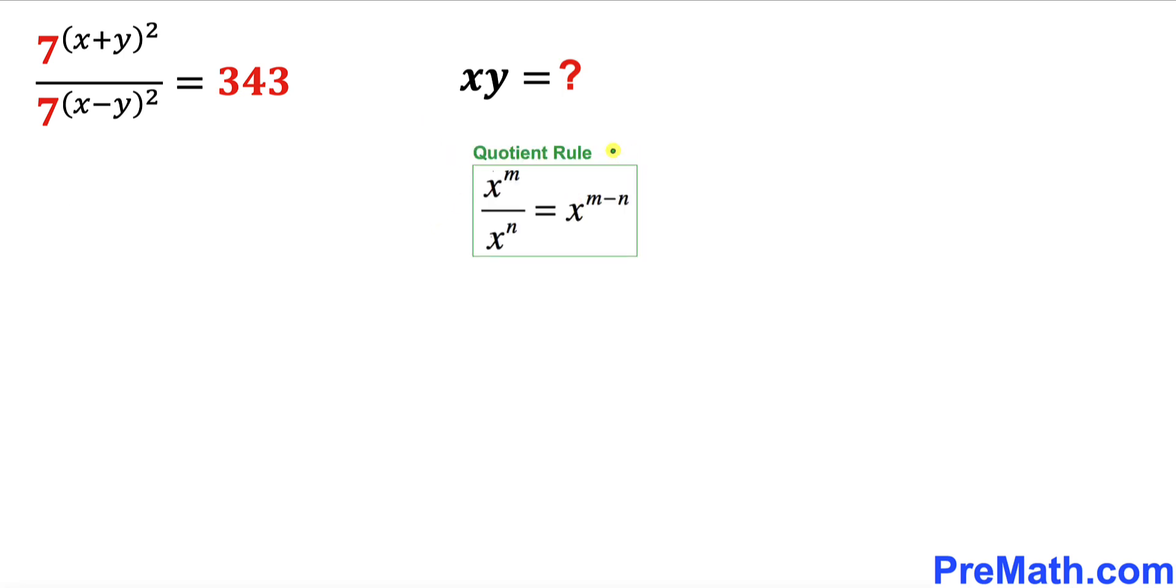Now let's recall the quotient rule of exponents. We are going to apply it on the left hand side of this equation. So therefore the left hand side could be written as 7^[(x+y)² - (x-y)²] equals 343 on the right hand side.